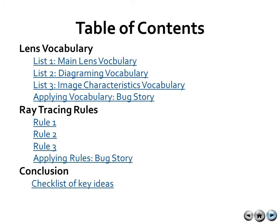What we're going to go over in this session is lens vocabulary. We'll look at main vocab, diagramming vocab, image characteristics, and then apply it to a bug story. As well, we'll look at ray tracing rules and apply those rules back to the bug story. Hopefully after viewing this presentation, you will have a better feel for the refraction of light through a convex lens, and we'll finish this session with a checklist of key ideas.